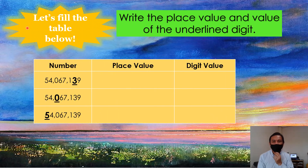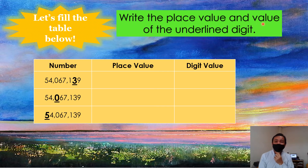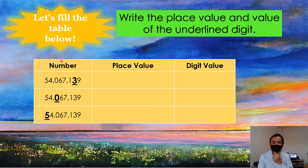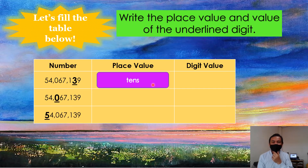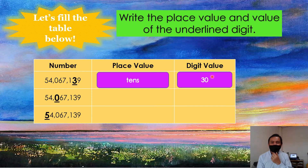Okay, let's fill the table below. Write the place value and digit value of each digit. What is the place value of 0? Answer: tens. The place value of 0 is tens. Next, what is the digit value of 3? The digit value is 30.